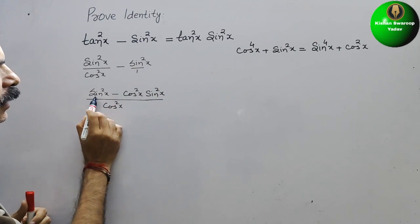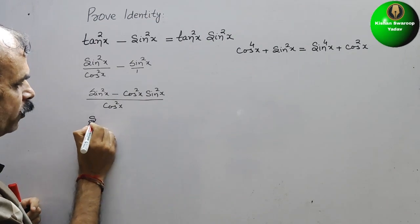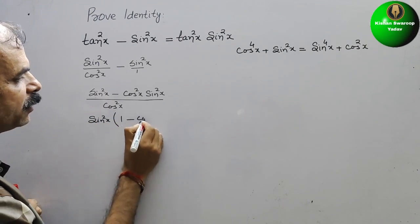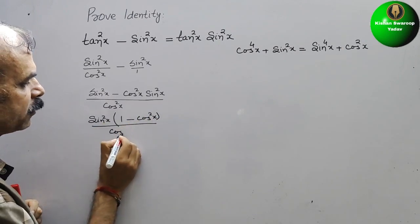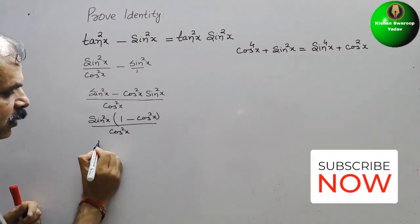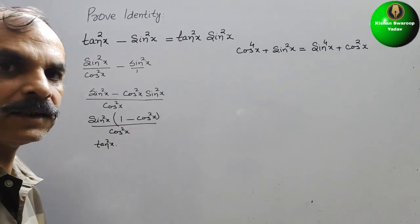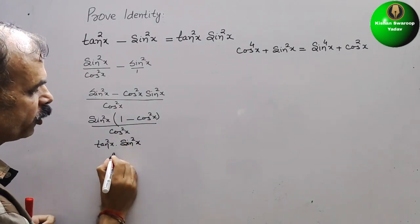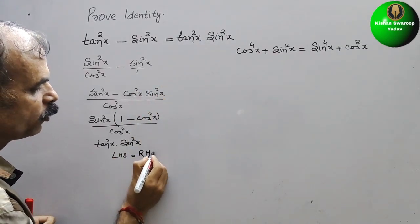In the numerator, sin square x is common, so we take it out. That gives us sin square x times the quantity 1 minus cos square x, divided by cos square x. Now sin square x divided by cos square x is tan square x, and 1 minus cos square x is sin square x. So this equals tan square x times sin square x. LHS equals RHS.